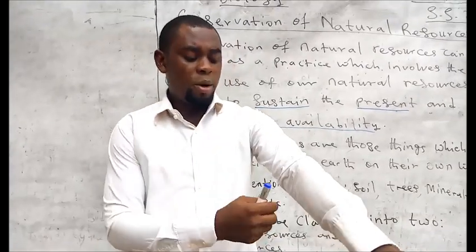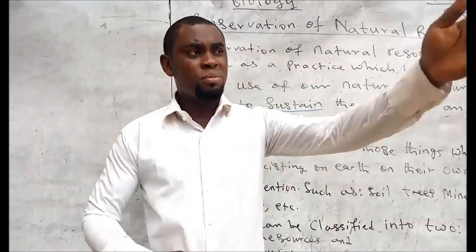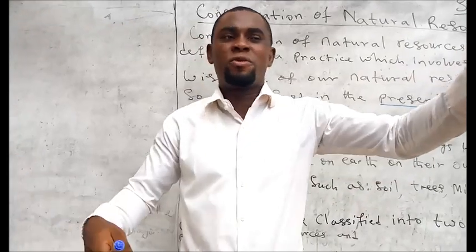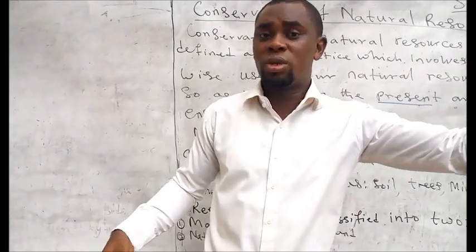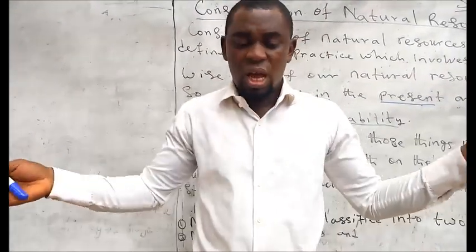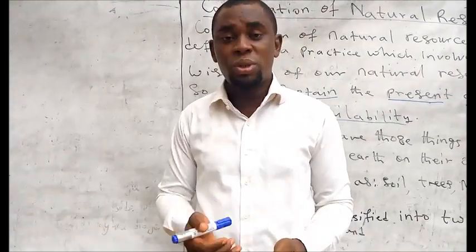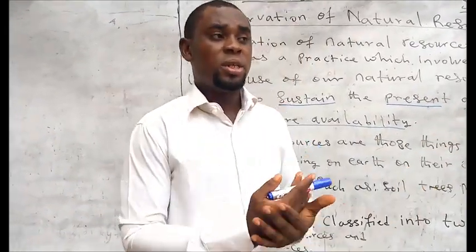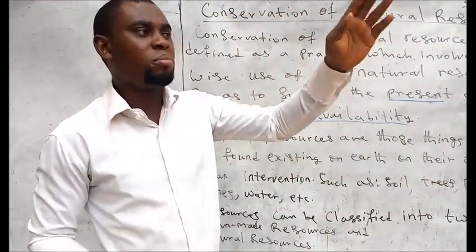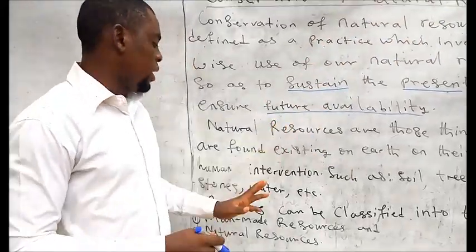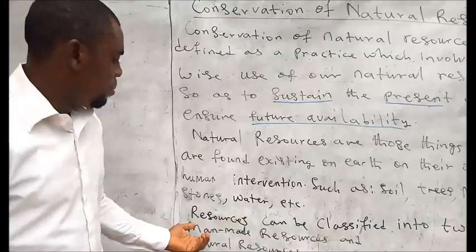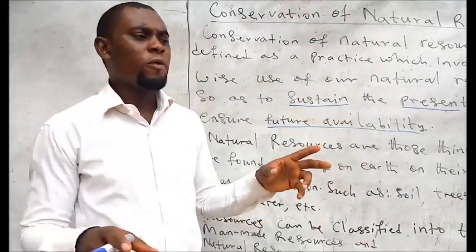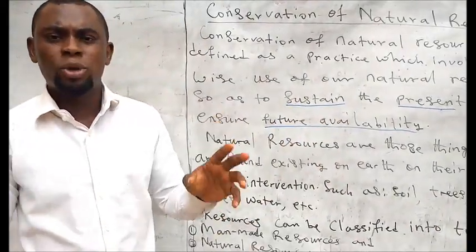Even the cloth I'm wearing is a man-made resource made from plant materials called cuttings, and sometimes gotten from silk plants. The books we use in writing are also man-made resources gotten from plants. So man-made resources are gotten from natural resources.